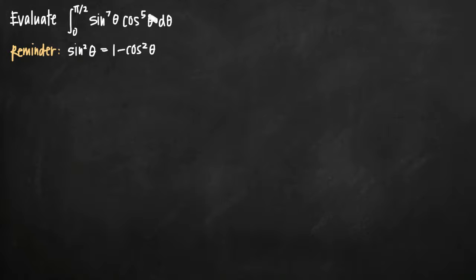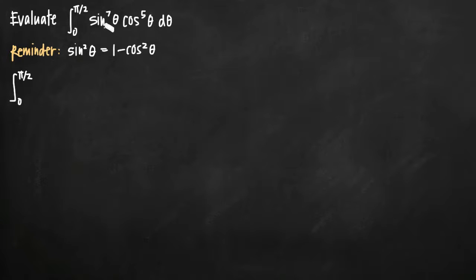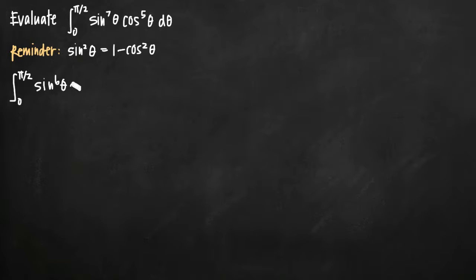We have five and seven, and those are both odd numbers. The first thing we want to do is make a change to our integral where we pull out one of the sine thetas or one of the cosine thetas to make the remaining exponent even. You can choose either one — I usually choose sine just out of habit. What you want to do is pull out one sine, so what we'll end up with essentially is sine to the sixth of theta times sine of theta times cosine to the fifth of theta.